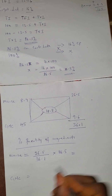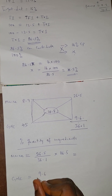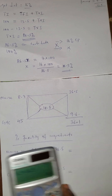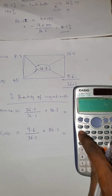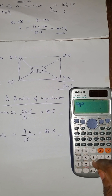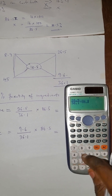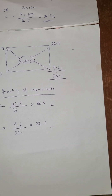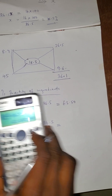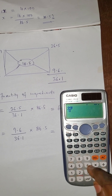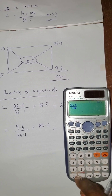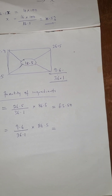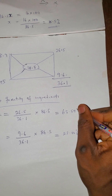For GNC as well: 9.6 over 36.1, then multiplied by the total variable ingredients of 86.5. Press this on the calculator. For Maize: 26.5 / 36.1 × 86.5 = 63.50%. For GNC: 9.6 / 36.1 × 86.5 = 23.00%. So the Maize percentage is 63.50% and the GNC percentage is 23.00%.